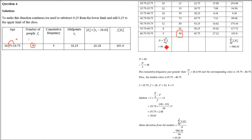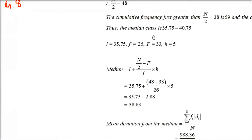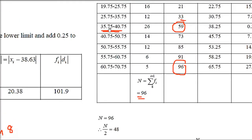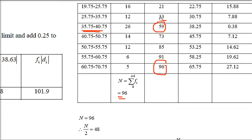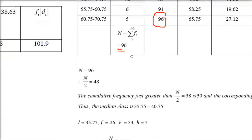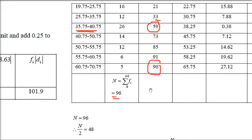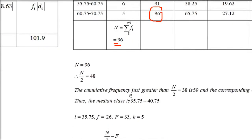The last cumulative frequency must equal the sum of frequencies = 96. Dividing 96 by 2 gives 48. Value 48 falls between cumulative frequencies 33 and 59, so we use that median class. For the formula: L = 35.75, N/2 = 48, capital F (previous CF) = 33, small f (class frequency) = 26.